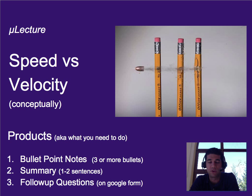We're not going to talk about the equations or calculations today, just the ideas. That's what conceptually means. Remember, this is a micro lecture, so it's going to be short. Three or more bullet points worth of notes is required to get full credit, as well as a summary of one to two sentences, and you need to do the follow-up question on the Google form unless your teacher tells you to do it somewhere else.